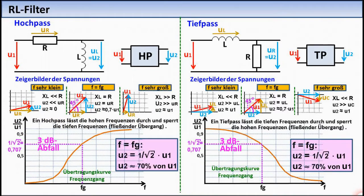In these two circuits, the two capacitors in the previous circuits have been replaced by coils. Here too, two filters are created, namely on the left a high-pass, because the coil here short-circuits all low frequencies, and on the right a low-pass, because the coil here blocks all high frequencies.